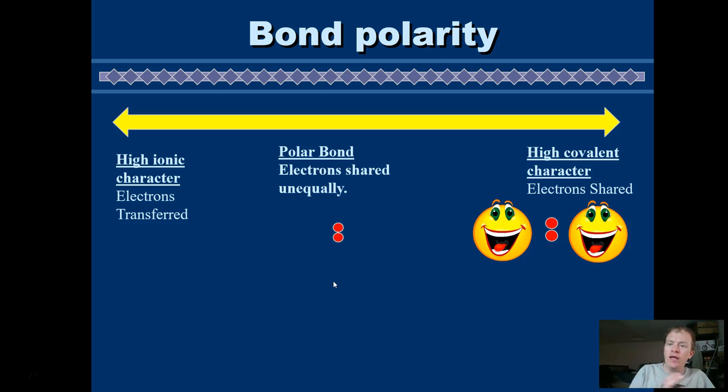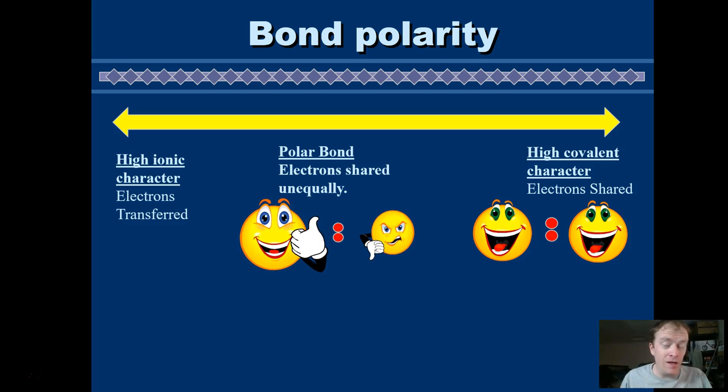On the other hand, we can have a high covalent character. So we have these two happy little fells here. They have two electrons. It's right in between them. They're sharing them totally equally. So that bond would have a high covalent character. But then we can have everything in between. We can have sharing but maybe not equal sharing.